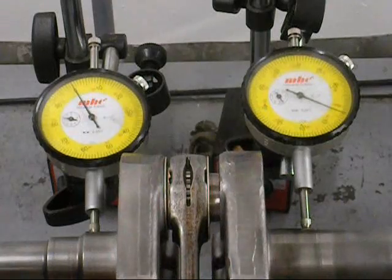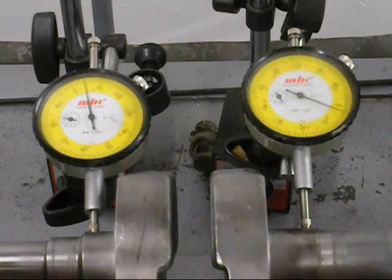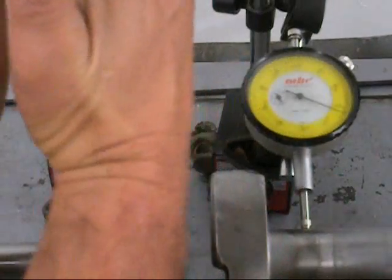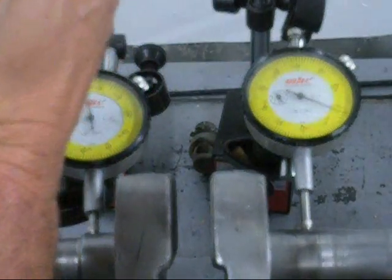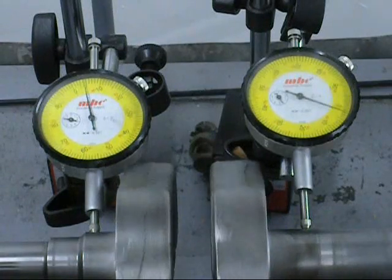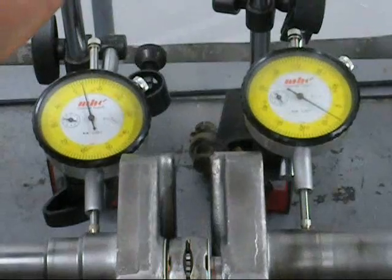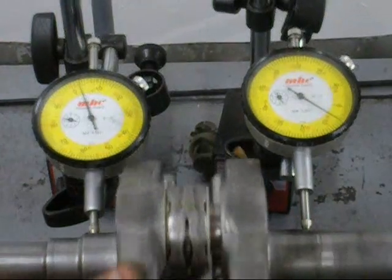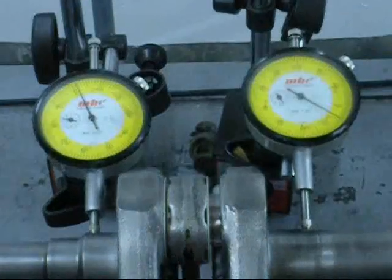If both indicator needles increase at the same time, that means that the crankshaft is like this. It either has to get pulled in on one side or pushed out on another. If the needles move, if one goes up and increases and the other one goes down, that means that the crankshaft has to be twisted. It has to go this way or this way. Because let's face it, I can put this thing together any way I want, and these needles are just telling me what adjustments I have to make.